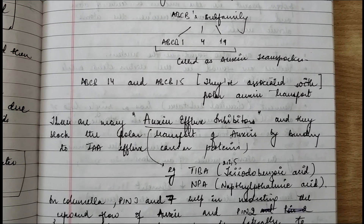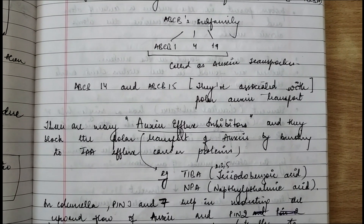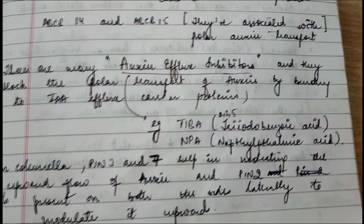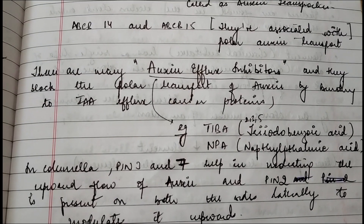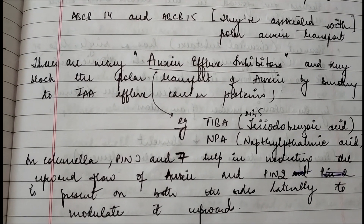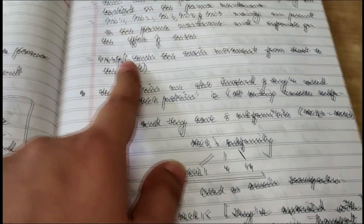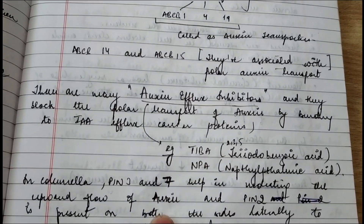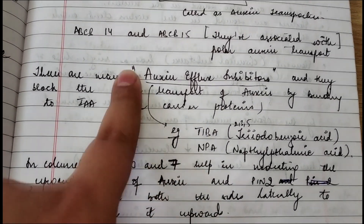There are also auxin efflux inhibitors, which inhibit or block polar transport of auxin by binding to the IAA efflux carrier proteins. There are two types: TIBA (2,3,5-triiodobenzoic acid) and NPA (naphthylphthalamic acid). In the columella, PIN3 and PIN7 help in modulating the upward flow of auxin — that is, from root to shoot.